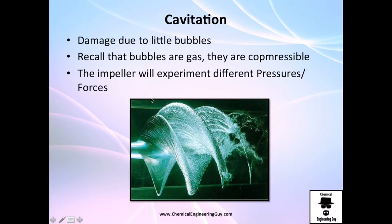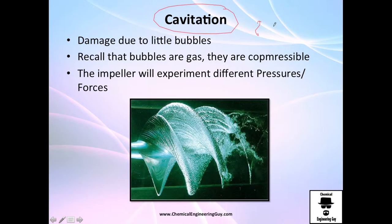You will probably hear about cavitation — cavitation is the worst thing you can have in a pump. It is essentially damage caused by little bubbles. You might ask why bubbles damage the impeller. It's because they evaporate and when they evaporate they implode, and this implosion causes a lot of damage. These bubbles are compressible, and as I mentioned, we are only interested in constant-density flow — compressible flow will damage the impeller.